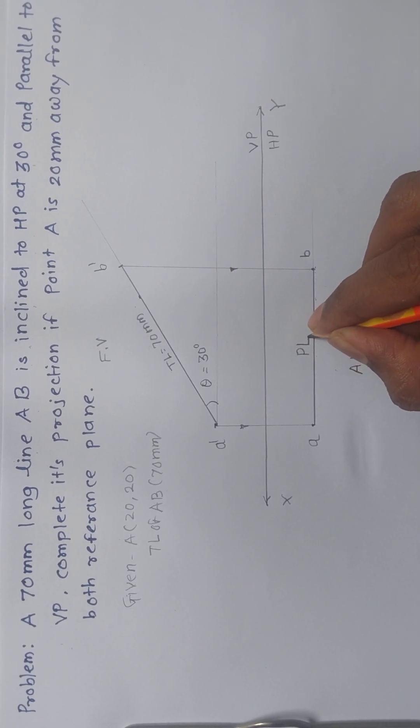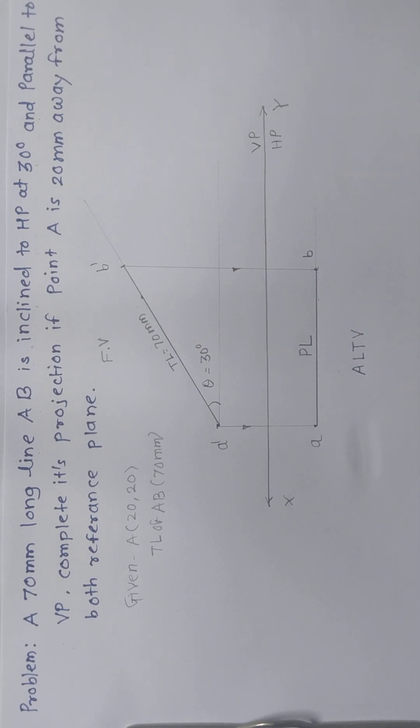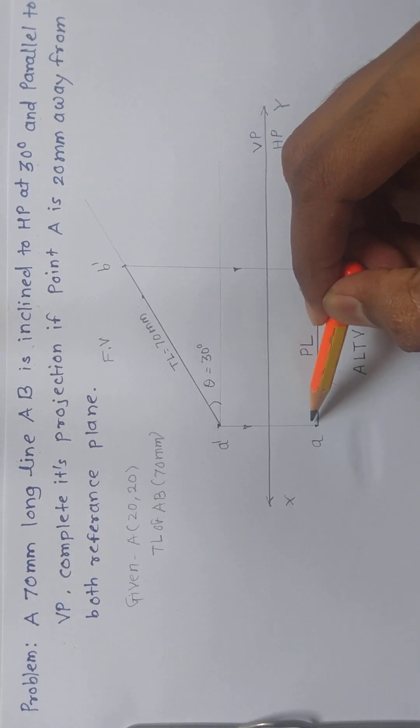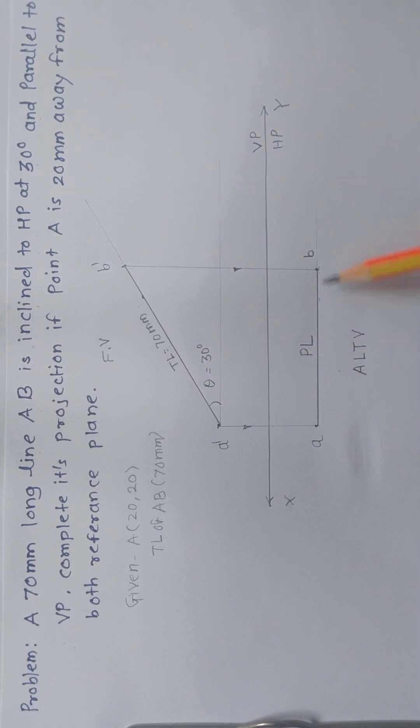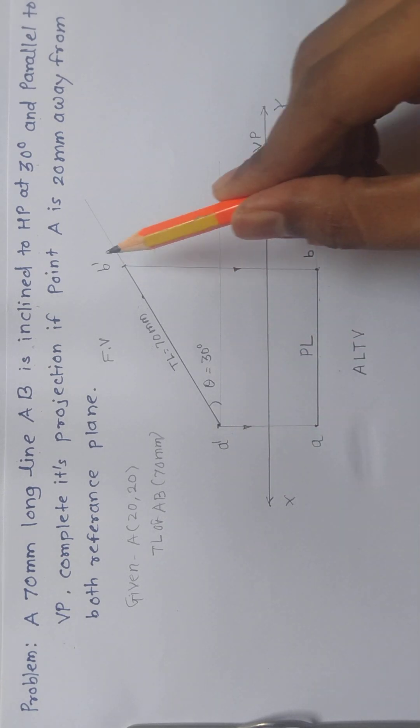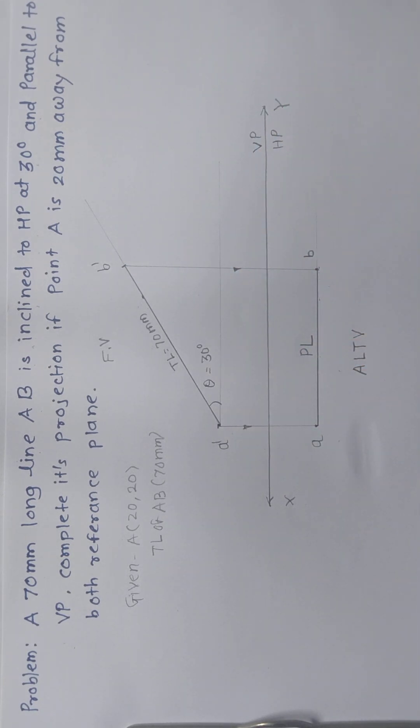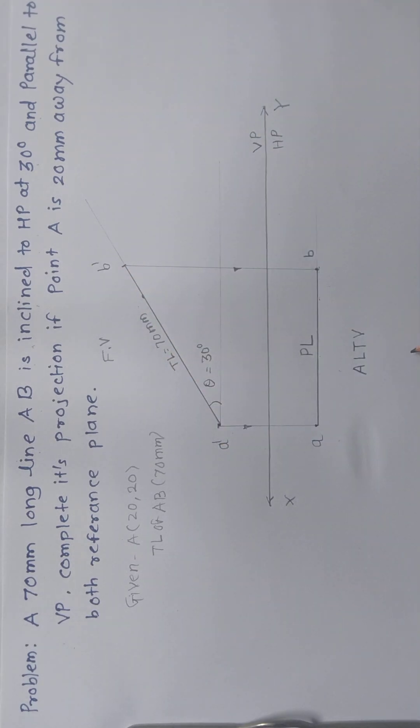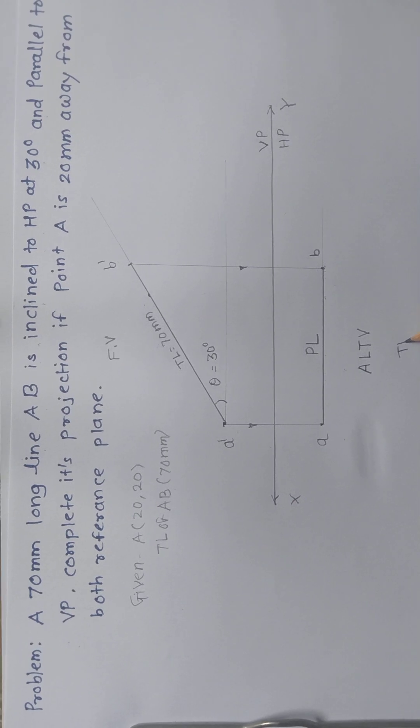Such kind of projection you have to draw while solving problems based on projection or complete the projection. Use faint lines for construction and dark lines for final views: A dash A, B dash B. This is the complete front view and this is the top view of the line.